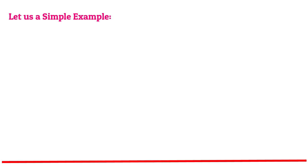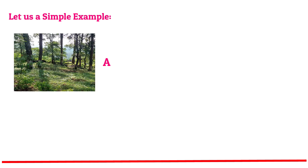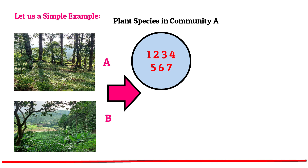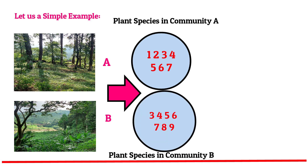For easy and better understanding, let us use a simple example with a pictorial diagram. We are interested in finding the similarities between two plant communities in our study area. The first step is studying the quantitative structures of the plant communities. The species found in plant community A are 1, 2, 3, 4, 5, 6, and 7, and the species found in plant community B are 3, 4, 5, 6, 7, 8, and 9.